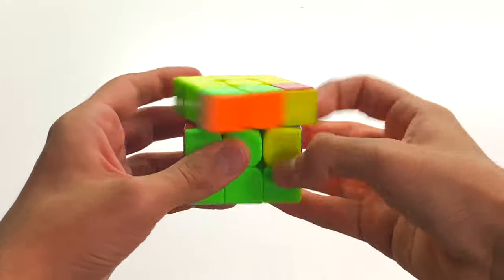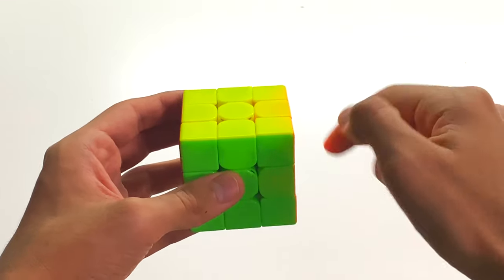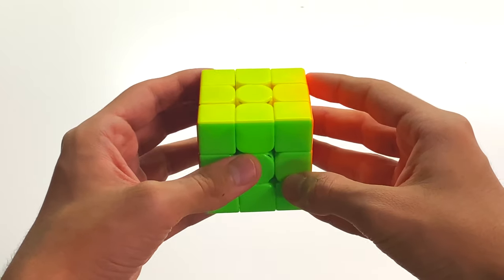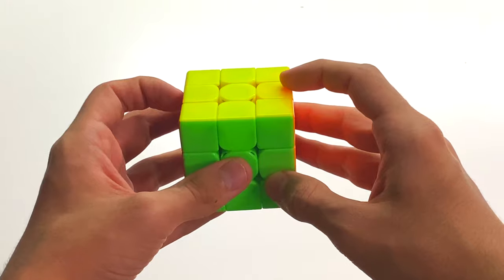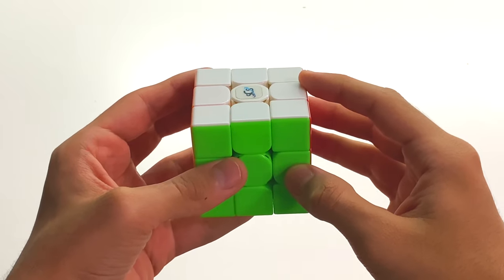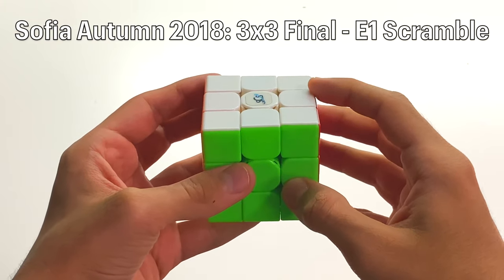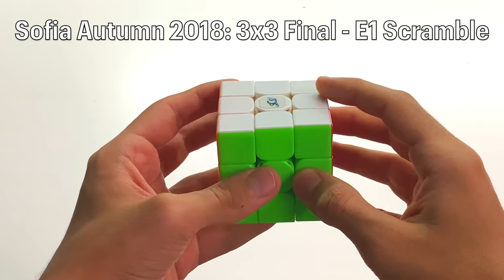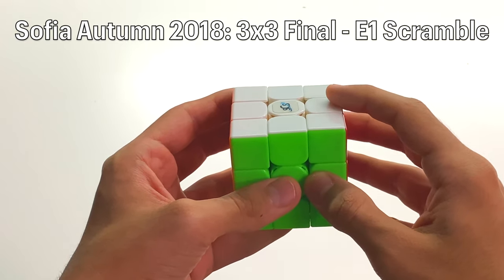Now I'm not going to go over the other two 13-movers. Again, this document will be linked in the description below. Feel free to try those scrambles out for yourself. However, I do want to go over the 12-mover. Now this scramble was done at Sofia Autumn 2018 in the 3x3 finals round.